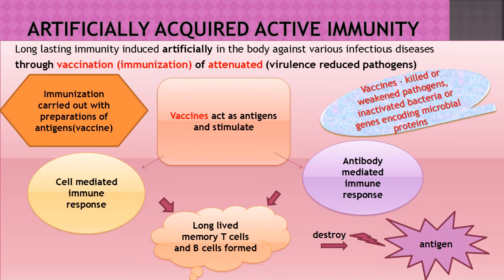Artificially acquired active immunity is also long-lasting immunity, induced artificially against various infectious diseases through vaccination or immunization using attenuated pathogens. Attenuated means the virulence — the disease-causing capacity — of the pathogen is reduced. In the laboratory, these disease-causing viruses or bacteria are subjected to treatment that weakens them so they do not cause disease but can still stimulate an immune response.